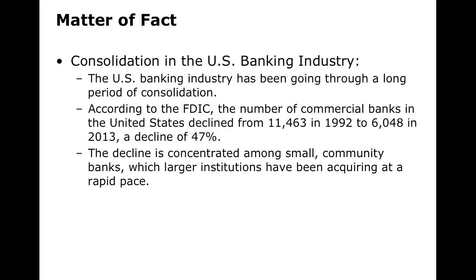Because of the 1999 repeal of the Glass-Steagall Act, the U.S. banking system went through a lot of consolidation. According to the FDIC, the number of commercial banks in the United States declined from 11,000 to 6,000 — a decline of almost 50%. These banks were getting bigger and consolidating, and a lot of the small community banks were gobbled up by larger institutions.